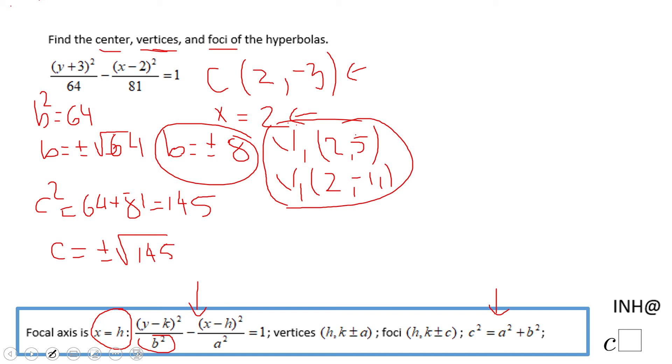Similar to the vertices, we're going to move up and down from the center by the square root of 145, and we're going to get the foci. The first focus will be (2, -3 + √145), and the second focus will be (2, -3 - √145).